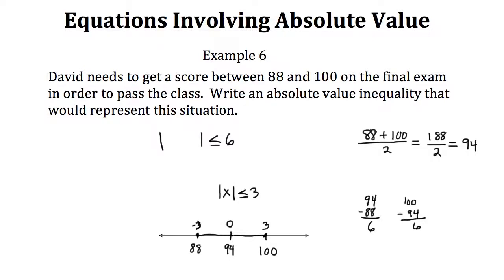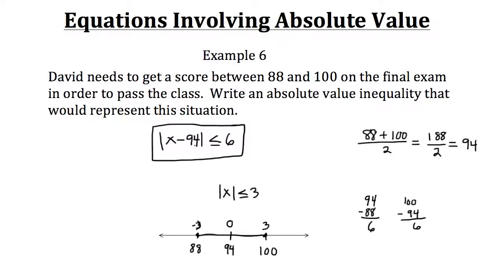Since our middle point is 94, we don't want to go any more than 6 in either direction. So what goes inside the absolute value? We need to offset our origin — normally it's 0, but now it's 94. So we subtract 94. For example, if our score was 94, then 94 minus 94 gives us 0, which is where our origin should be. So our absolute value inequality for this situation is: the absolute value of x minus 94 is less than or equal to 6. 94 is our midpoint and we don't want to go more than 6 above or below it to stay in this range. So if David can do that, he'll pass his class.